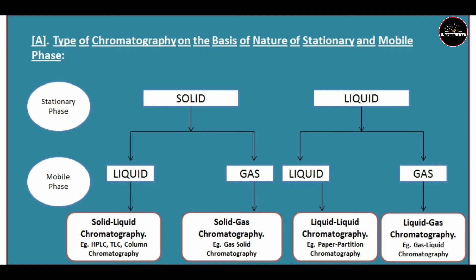When stationary phase is solid and mobile phase is gas, the type becomes solid-gas chromatography, with gas-solid chromatography as an example. When stationary phase is liquid and mobile phase is liquid, the type is liquid-liquid chromatography, with paper partition chromatography as an example. When stationary phase is liquid and mobile phase is gas, the type is liquid-gas chromatography, with gas-liquid chromatography as an example.